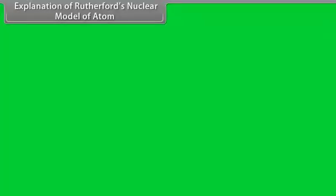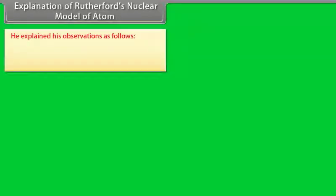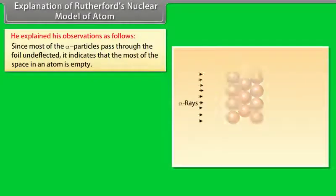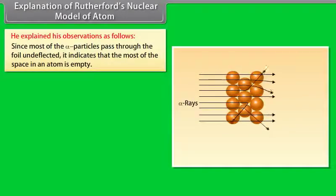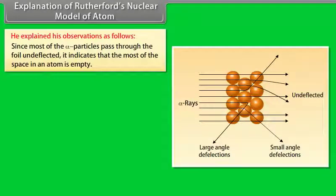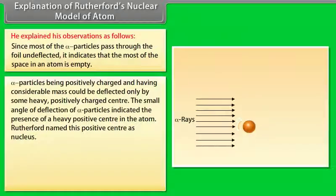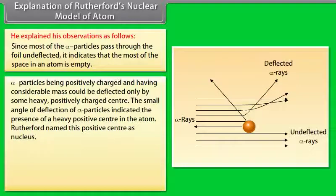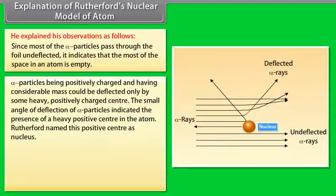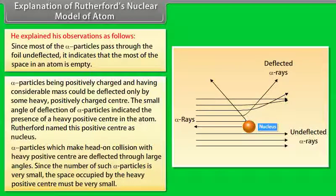Rutherford's explanation: (1) Since most alpha particles pass through undeflected, most of the space in an atom is empty. (2) Alpha particles being positively charged with considerable mass could be deflected only by a heavy positively charged center; small deflections indicated the presence of a heavy positive center called the nucleus. (3) Alpha particles making head-on collision with this center are deflected through large angles; since very few particles are so deflected, the nucleus must occupy very small space.